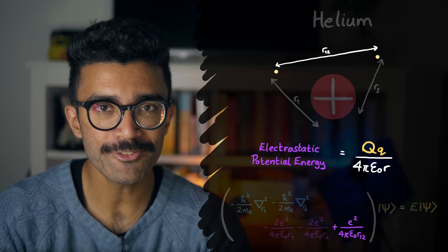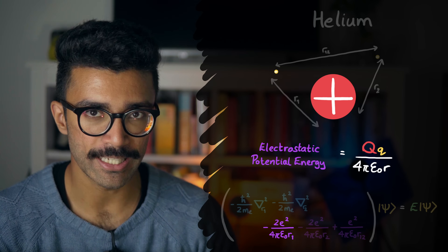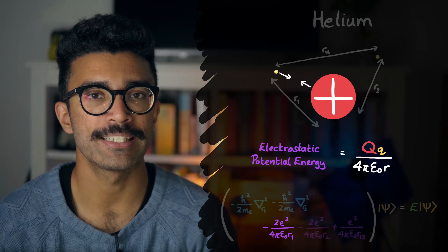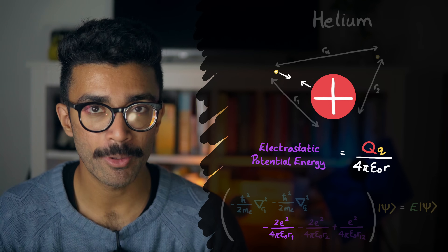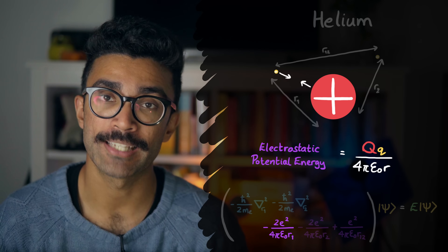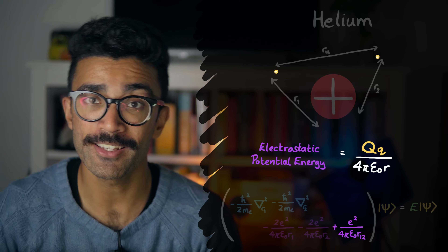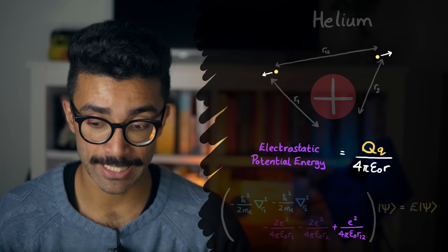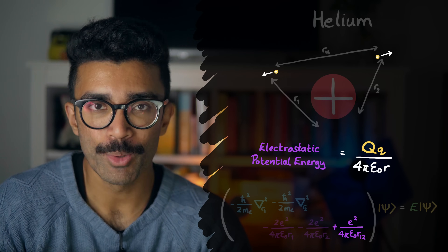The potential energy is negative when one particle is negative and the other is positive, meaning the force between them is attractive — they attract each other due to opposite charges, which reduces the energy of the system. Lower energies are generally what systems tend towards, so attracting particles move to lower energy states. The potential energy between two particles of the same charge is positive, because like charges repel each other, and pushing them together would increase the potential energy.